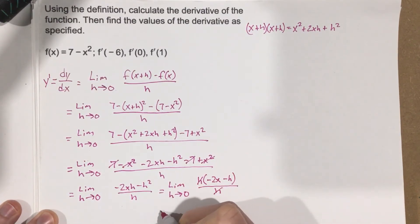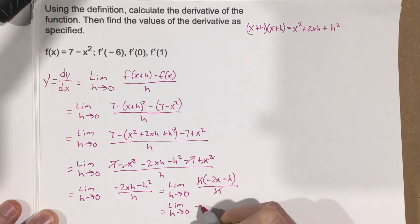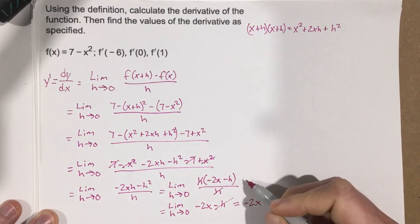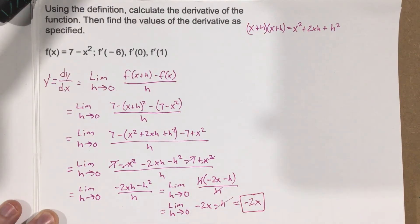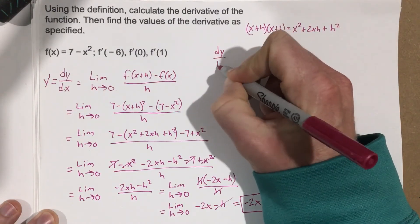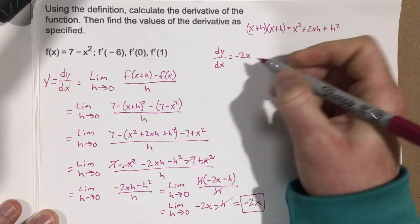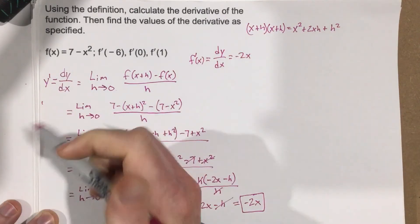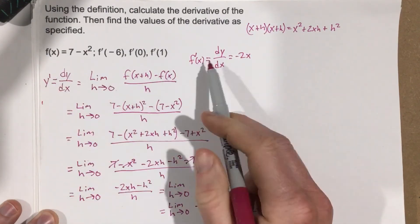Now when I take the limit as h approaches 0 of negative 2x minus h, I'm left with negative 2x. This is the derivative for the function 7 minus x squared. So, dy over dx equals negative 2x. We're going to also label that f prime of x, which is a different notation for saying the derivative.